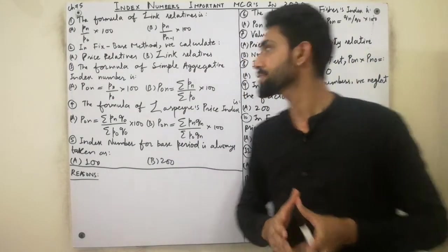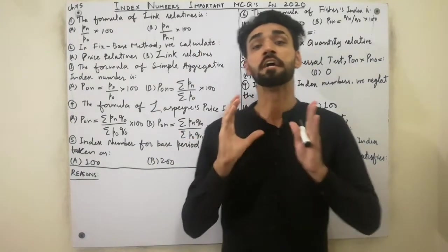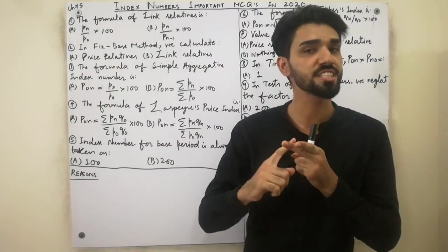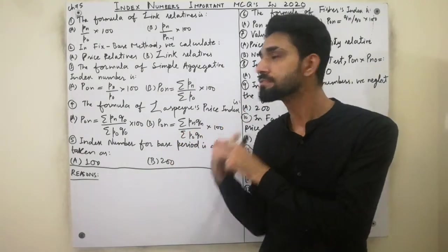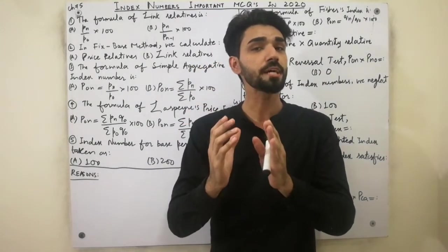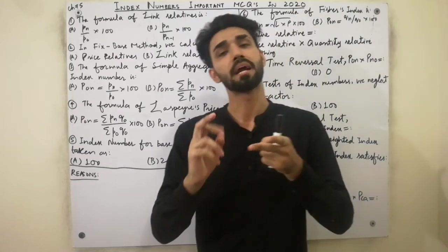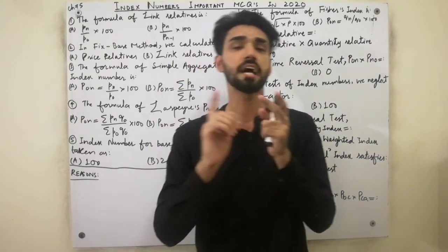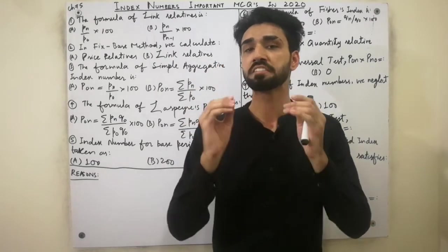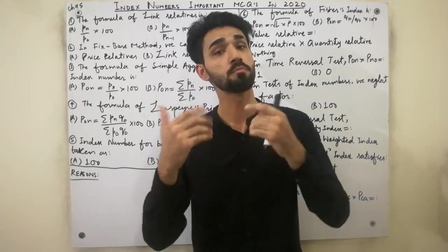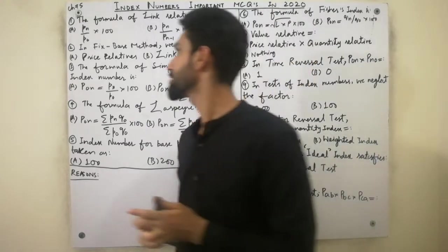Assalamu alaikum dear friends, today I am here to explain Chapter Number 5 index number important MCQs. These MCQs are very very important for you, and each step in each MCQ is very important. I will tell you reasons and solutions for why the MCQs are correct. If you want to gain concepts from other chapters — Chapter 1 introduction to statistics, Chapter 2 presentation of data, Chapter 3 measures of central tendency, Chapter 4 measures of dispersion — you can find the description below or visit the playlists.